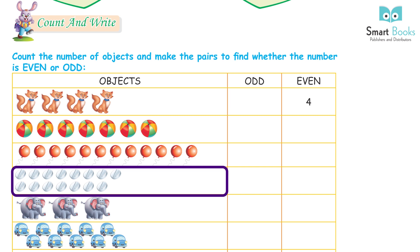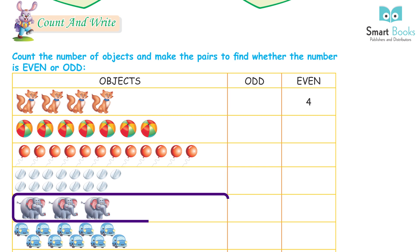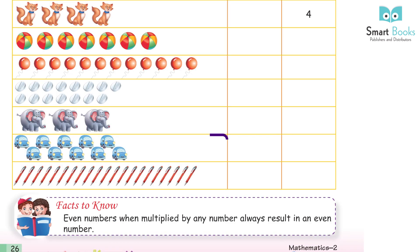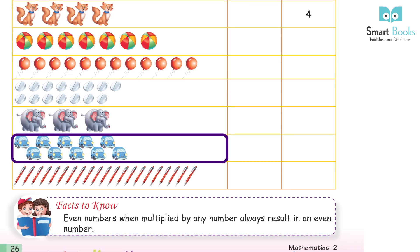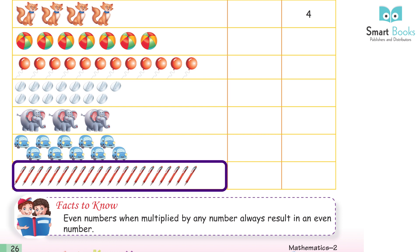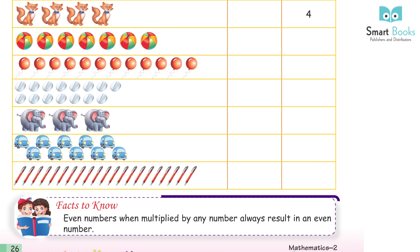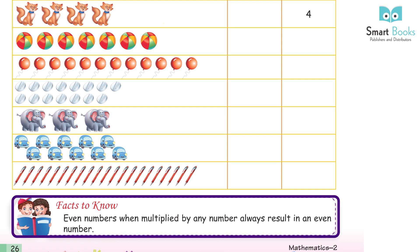Three elephants — three is an odd number. Ten cards — ten is an even number. Twenty-one pens — twenty-one is an odd number. Facts to know: even numbers when multiplied by any number always result in an even number.